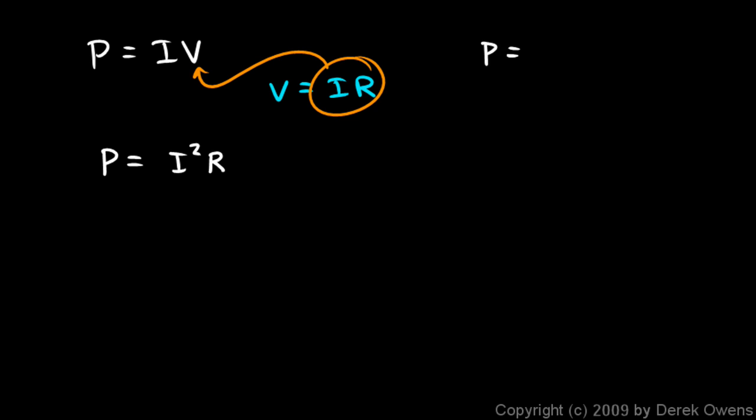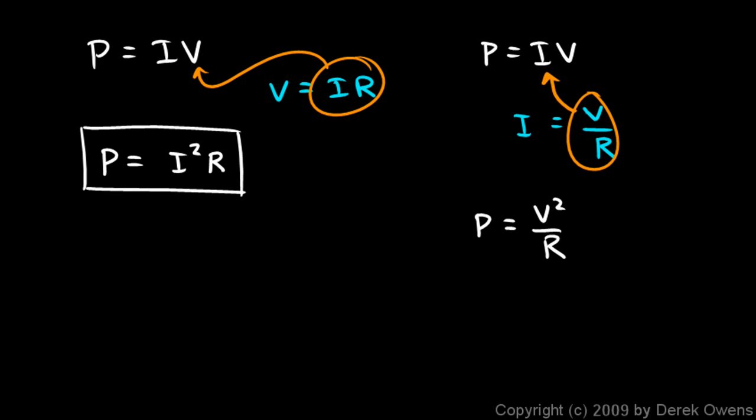Now let's do it again. Let's take this equation P is equal to IV and take Ohm's law again, but now take Ohm's law written like this: I is equal to V over R. Take this and plug it in for the I right there, and that would give us P is equal to V over R times V, which is V squared over R. So we get two other equations for power that come from thinking about what power is and Ohm's law together.